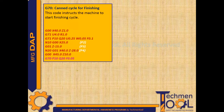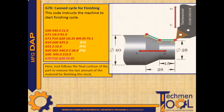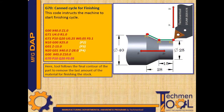G70 canned finishing cycle. This code instructs the machine to start finishing cycle operation. Let us take one sample program for finishing cycle. After the roughing operation as discussed in the previous section, finish turning operation takes place, as mentioned in the pink colored last block. The tool follows the final contour of the part to remove the last amount of material for finishing the stock.